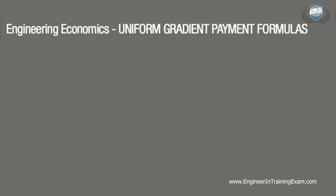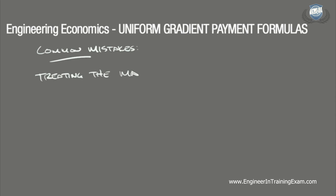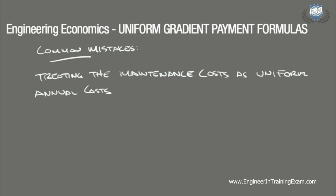There are some ways we can make mistakes on this problem. One issue may arise when we treat the maintenance costs as a uniform annual cost — that is, assuming the $250 maintenance cost remains the same through all 15 years. This problem statement specifically defines the transaction as a cost incrementally increasing as a uniform gradient, and using any other approach would significantly underestimate the amount of money needed to set aside.